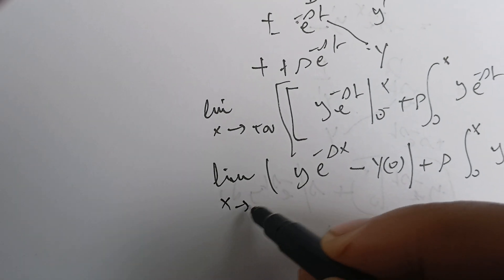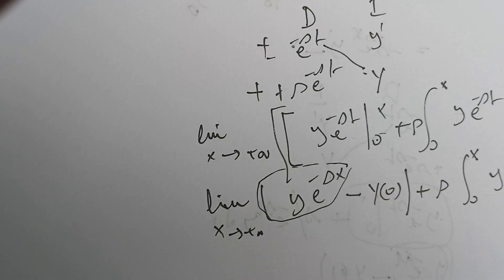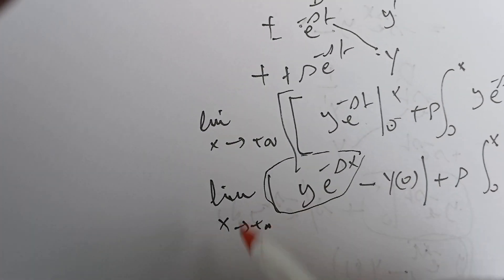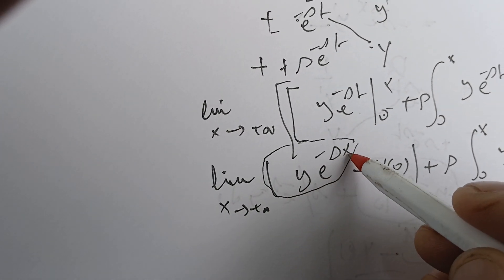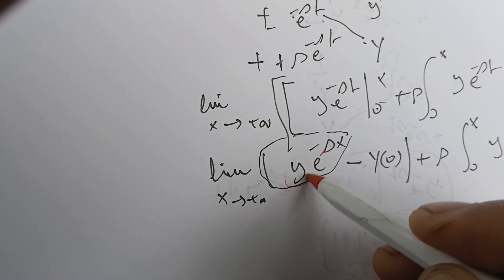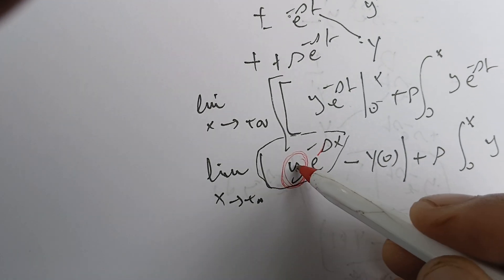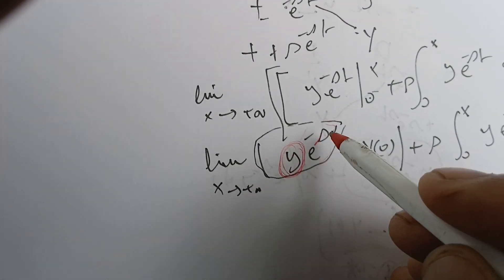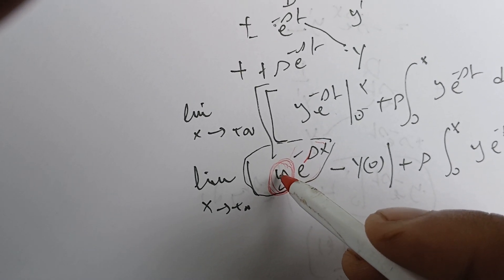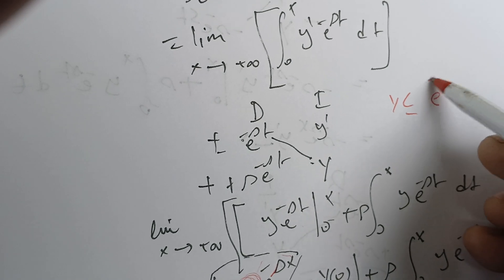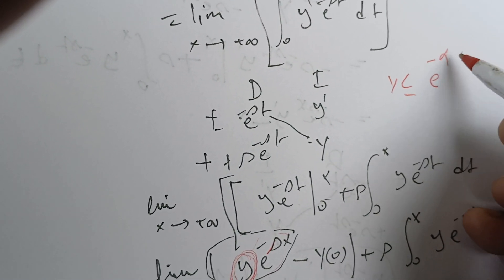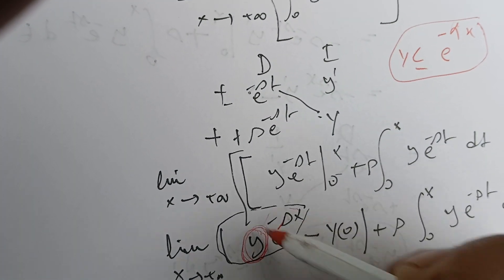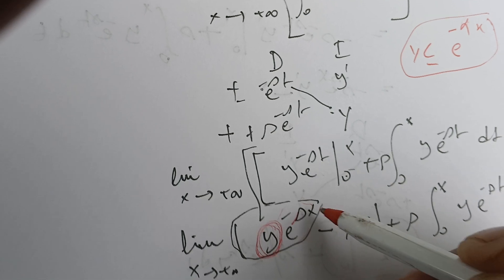Now, as X goes to infinity, we need to make an assumption. The issue is this limit: as X goes to infinity of Y(X) e^{-sX}. We're going to assume that Y has what we call exponential order — meaning Y is less than some exponential, e^{alpha x}, where alpha can be positive or negative. With this assumption and our choice of S, this term goes to zero.